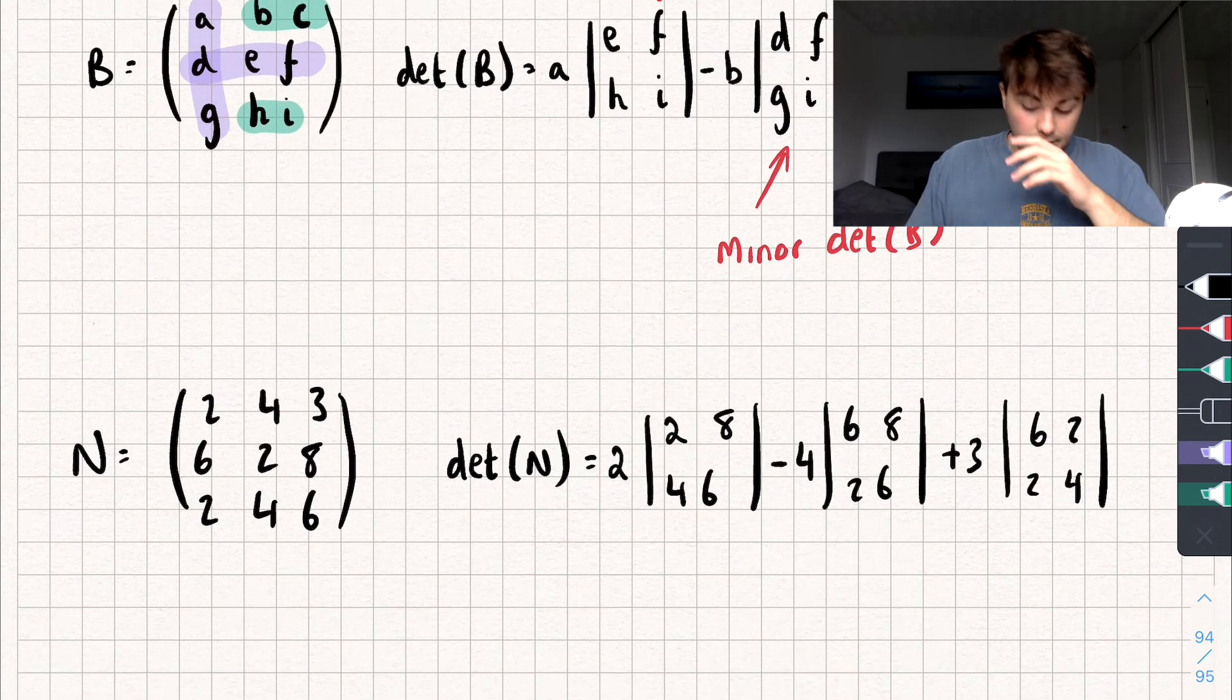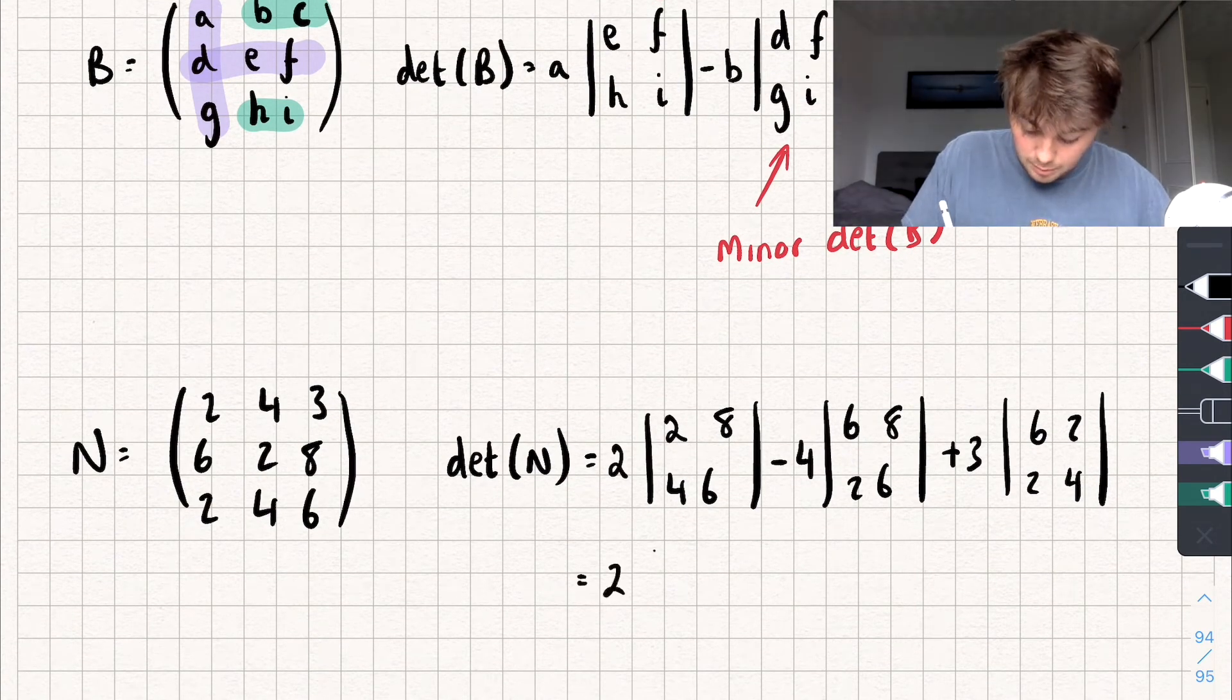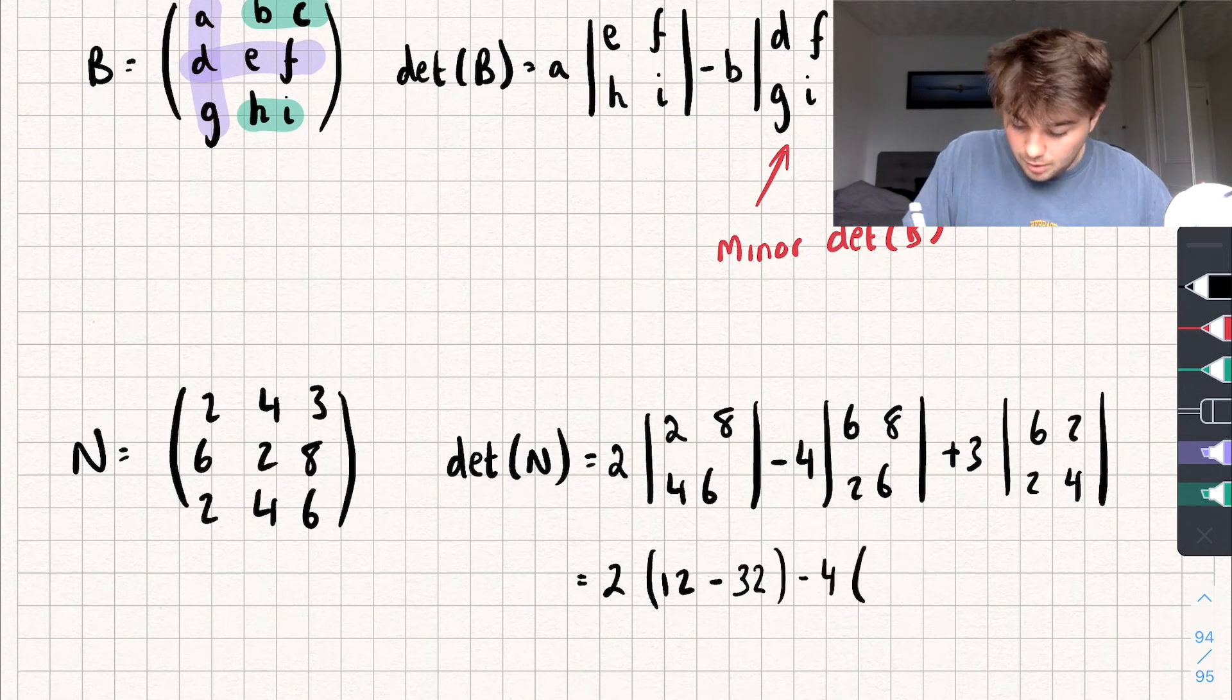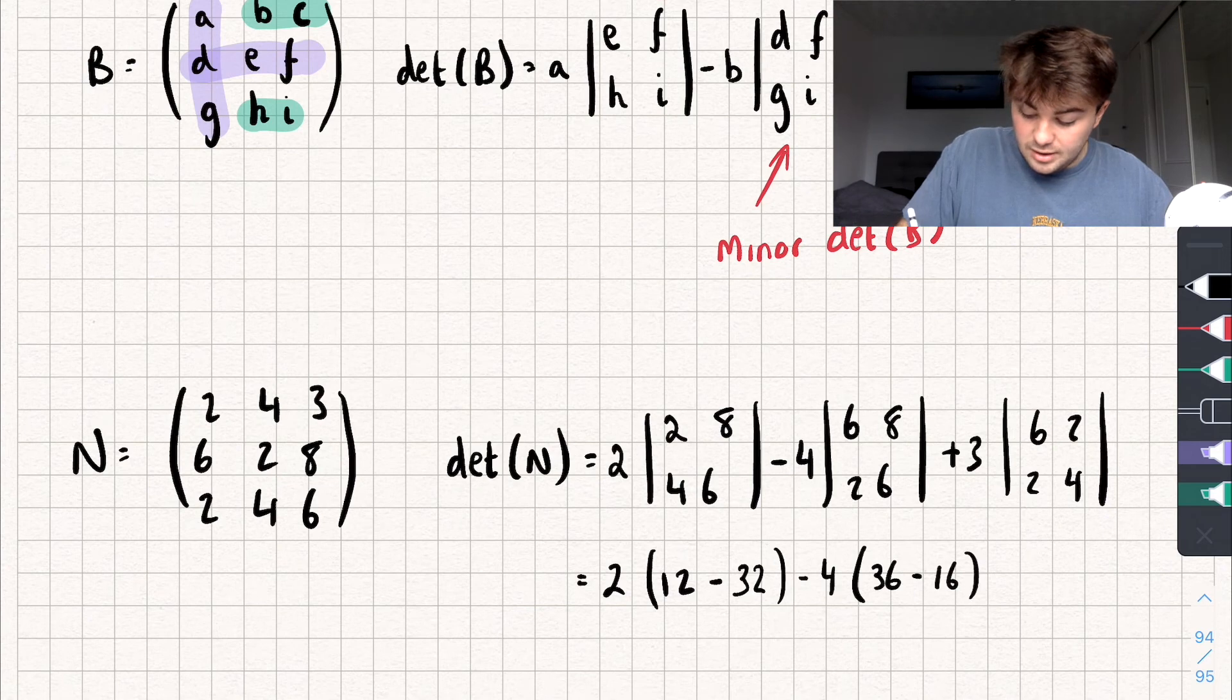So, let's calculate this. So, we're going to get 2 multiplied by, well, the minor determinant is 2 multiplied by 6, so 12, subtract 8 multiplied by 4, which is going to be 32. Then, I'm going to subtract 4 multiplied by 6 times 6 is 36, subtract 8 times 2, which is 16.